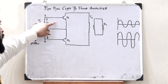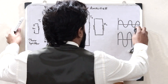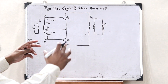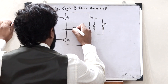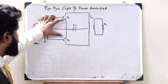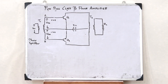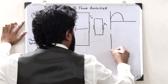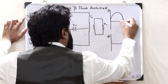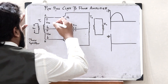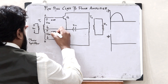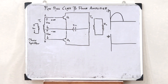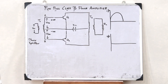The phase splitter splits the input signal into two halves where one half is exactly 180 degrees phase shifted with the other. Now let us consider the working of this push-pull class B power amplifier. A biasing voltage VCC is provided. When no input is applied, both Q1 and Q2 draw no power from VCC. During the positive half of the input cycle, VAO is positive whereas VBO is negative. Therefore Q1 is in the forward biased condition, and Q2 is reverse biased.